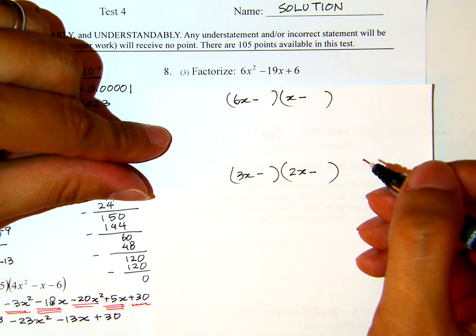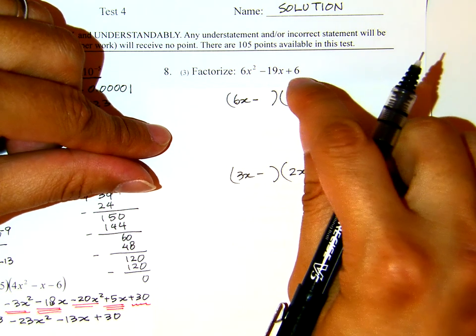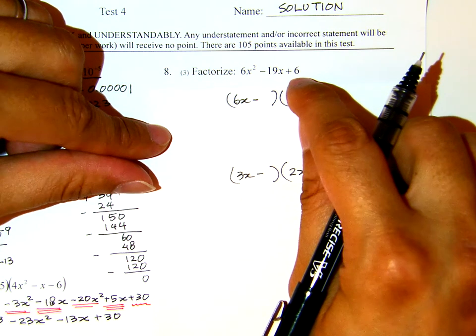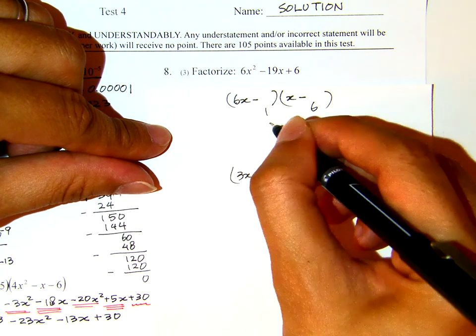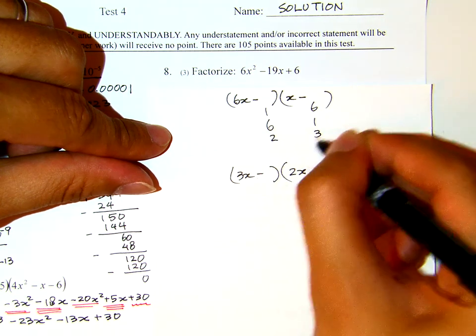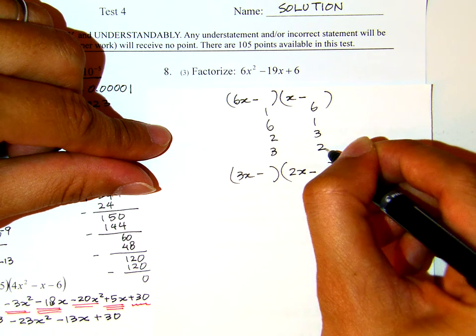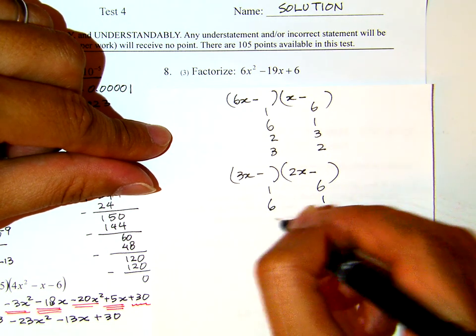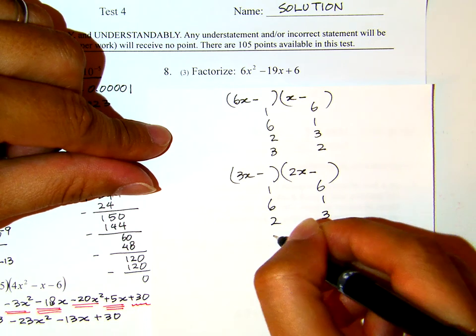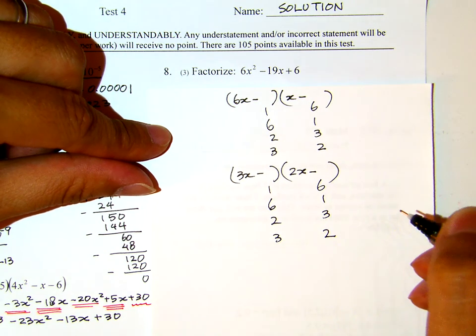Now, what I will do next is to list all the possible factors, pairs of factors for 6. It's 1, 6, 6, 1, 2, 3, 3, 2. Likewise for the other position: 1, 6, 6, 1, 2, 3, 3, 2.